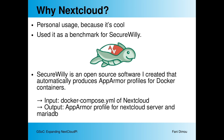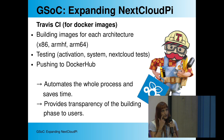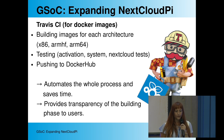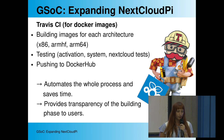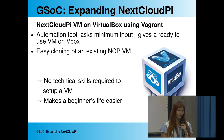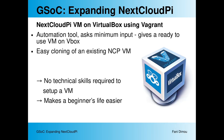First, I adapted Nextcloud Pi to continuous integration using Travis CI to build images for each architecture, run tests, and push images to Docker Hub. This automates the whole process, saves time, and provides transparency of the build phase. I also created an automation tool that asks for minimal input and gives a ready-to-use virtual machine on VirtualBox, including an option for easy cloning of an existing NCP VM — making a beginner's life easier with no technical skills required.